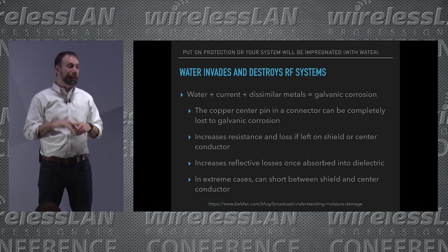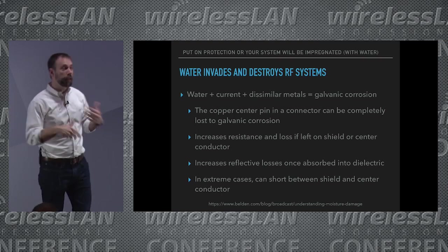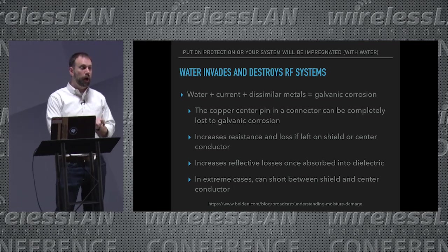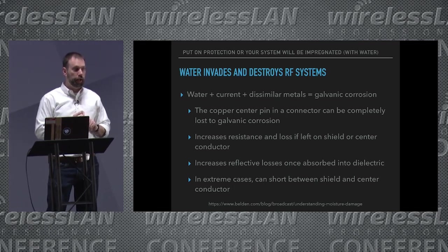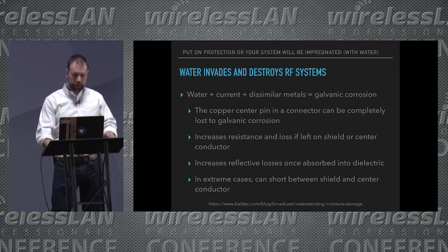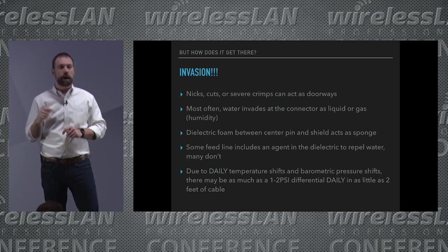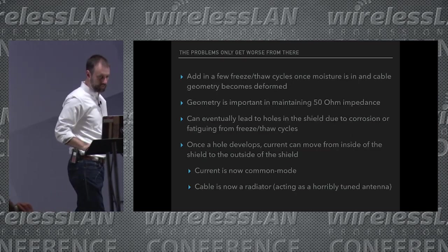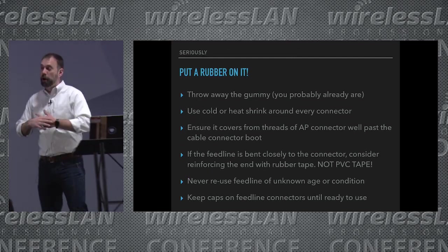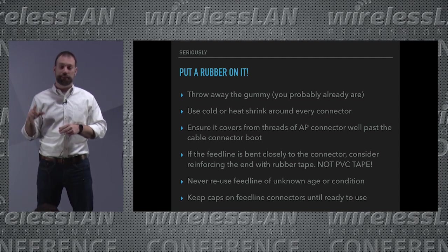Once water gets in, you get water plus current plus dissimilar metals — galvanic corrosion. At high power, as a ham operator, I've literally seen the center pin corrode away completely in a day. At our power levels it takes longer, but as soon as it starts to corrode, you're inducing more loss — it's no longer a 0.9 dB loss. The water actually invades most often through the connector. If you're not putting a rubber seal on it — the rubber gummy — nobody wants to use that stuff: it's horrible, it doesn't work well, and when you come back years later it's impossible to get off.